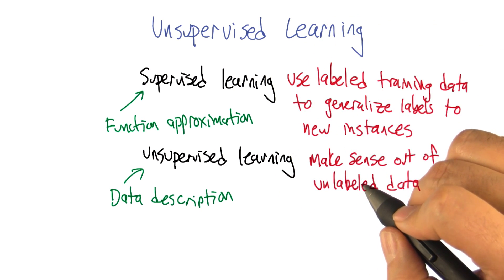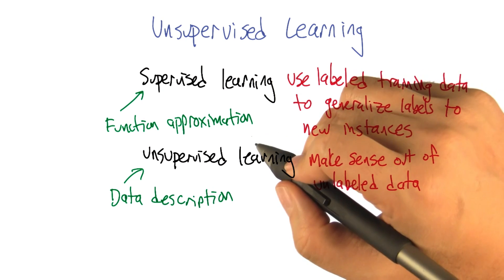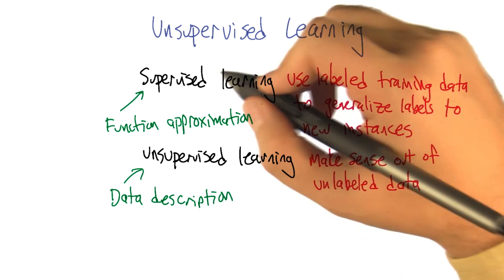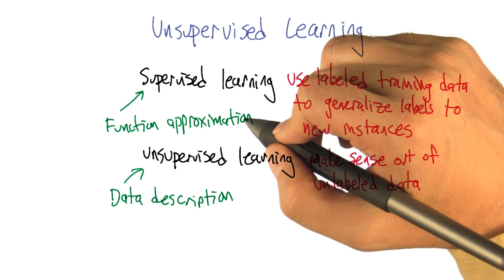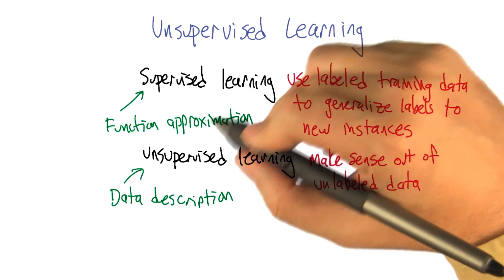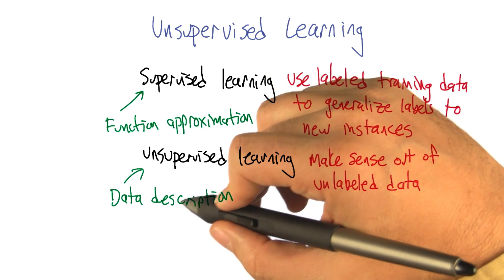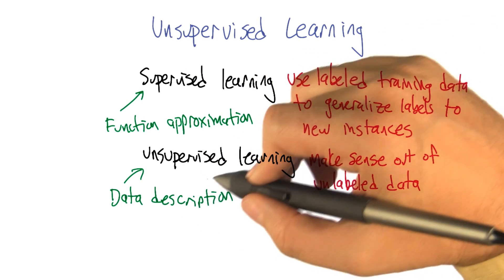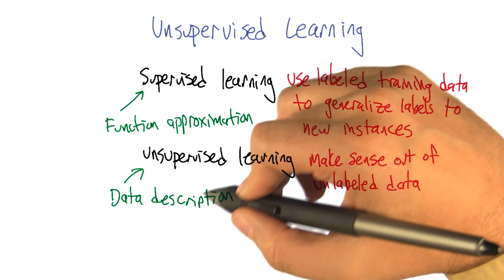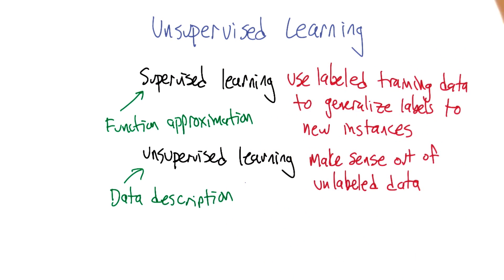Oh, I think that's definitely true. So, as labels — and I think we talked about this in the intro to the whole course — supervised learning we can sometimes think of as function approximation, which is learning how to map inputs to outputs, whereas unsupervised learning is data description. It's about taking the data that you've got and finding some kind of more compact way of describing it. Sure, I buy that. And that makes a lot of sense.